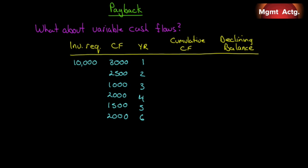Before we leave payback, what about variable cash flows? In a situation where we don't have constant cash flows, we need a schedule rather than just a formula. Let's say we spend $10,000 and it produces six years of variable cash flows. There are two approaches: cumulative cash flow and declining balance. After year one, cumulative cash flow is $3,000 and declining balance is $7,000 remaining. After year two, cumulative is $5,500 and declining balance is $4,500. These two always sum to $10,000.